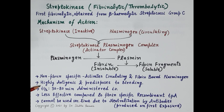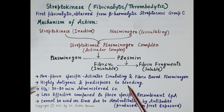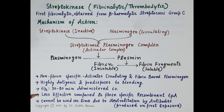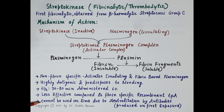Since streptokinase is derived from bacteria, it is highly antigenic and has a very high risk of bleeding. Its half-life is 30 to 80 minutes and it is administered by the intravenous route. It is less effective compared to fibrin-specific recombinant tissue plasminogen activators in opening occluded blood vessels. Furthermore, primary exposure to streptokinase produces antibodies, so it cannot be used a second time due to neutralization by antibodies produced during the first exposure.